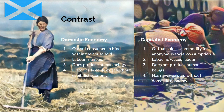If we contrast that to the capitalist economy, the outputs of production are now sold as a commodity for anonymous social consumption. Those who produce goods have no direct personal or family connection to those who consume them, and as such the only way in which production and consumption can be linked is via sale as a commodity. The labour that takes place is waged labour, not unpaid labour. The third point: it does not produce human beings. And the fourth point: it has never existed without a domestic economy and cannot exist except in conjunction with a domestic economy.